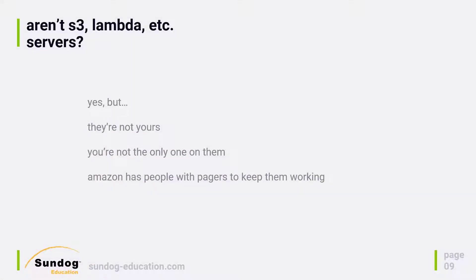Aren't these back-end services really servers at the end of the day? S3, Lambda, and Cognito are all running on a server somewhere ultimately. Yes, but they're not yours — you're not the one maintaining them. You're sharing this capacity with others, so you're only paying for the portions you actually need, which saves money and maintenance headaches. Amazon has people with pagers keeping these services up and running — and having worked at Amazon, we can tell you firsthand they do have pagers, and you don't want one. Let them do it.